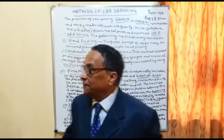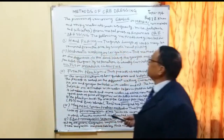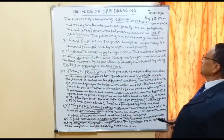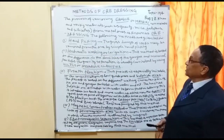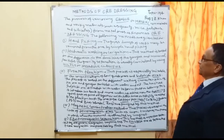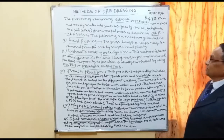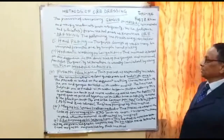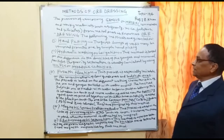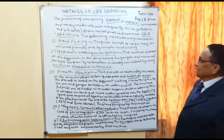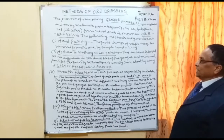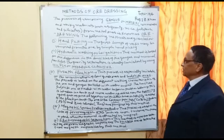These methods are discussed one by one. The process of removing gang or matrix — that is, non-metallic and rocky materials such as quartz, mica, feldspars, and silicates — from metal ores is known as ore dressing. The first method is hand-picking: gross lumps of rocks may be removed from the ore by simple hand-picking.